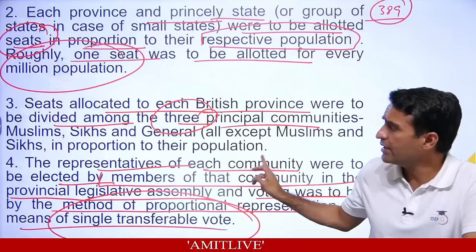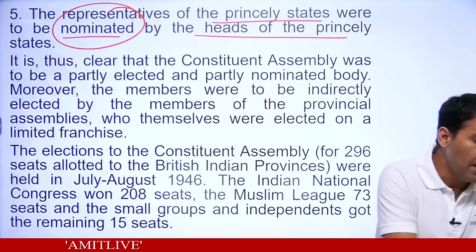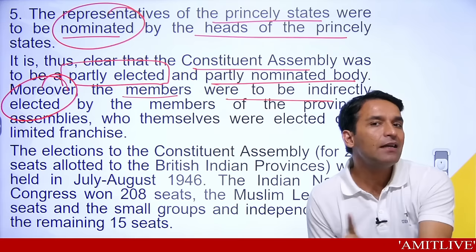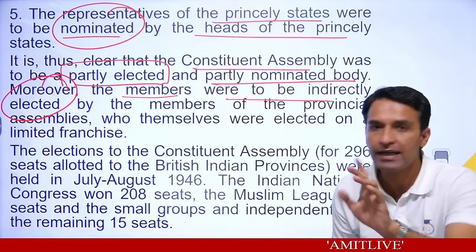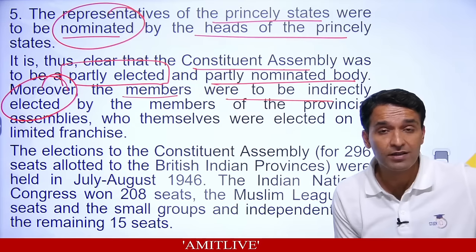So the Constituent Assembly was partly elected — the 296 people — and partly nominated — the 93 from princely states. Moreover, the members were indirectly elected. As Jawaharlal Nehru had imagined in 1938, that the Constituent Assembly would be on universal adult franchise basis, that didn't happen. Not everybody had the right to vote at that time, and then there were indirect elections for the Constituent Assembly.